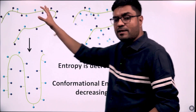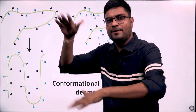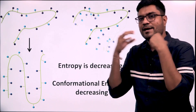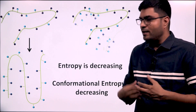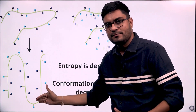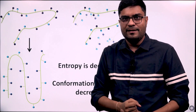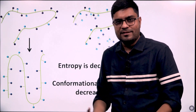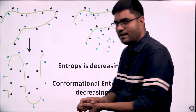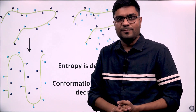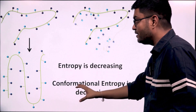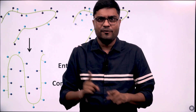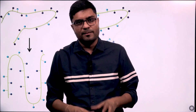To restate: a linear protein can have multiple free conformations — it can arrange itself in multiple ways in the same system, so W is high and entropy is high. But once it is folded into a particular native structure, the number of conformations decreases. The ways in which the protein can arrange itself are restricted. So W goes down, entropy goes down. During protein folding, conformational entropy is decreasing — this is the answer to our first question.